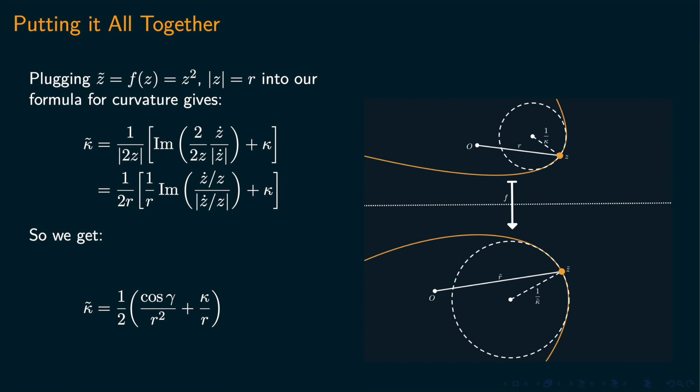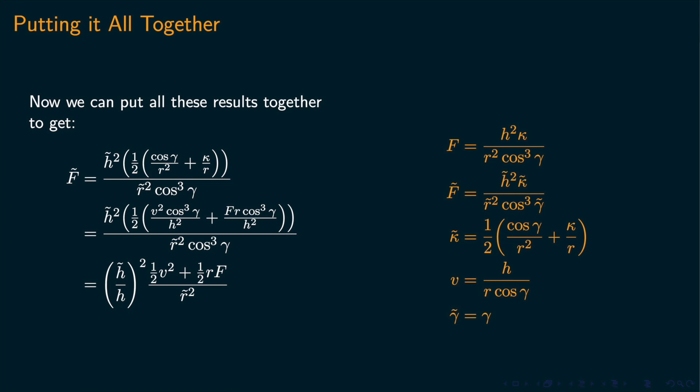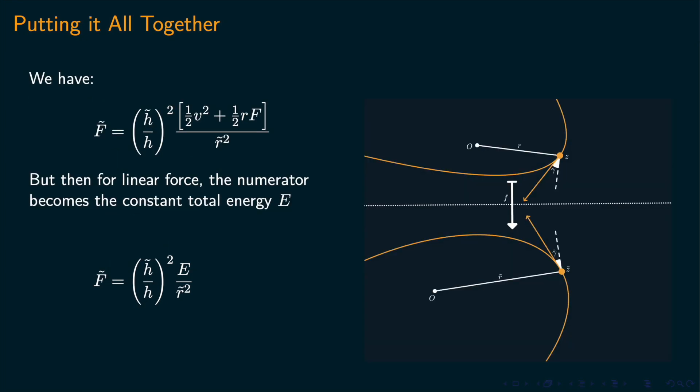We can apply our formula from before to z tilde equals z squared. Now we can put all our results together. If the force f is linear, the numerator becomes the constant total energy. So, f tilde is proportional to 1 over r tilde squared. So we're done.